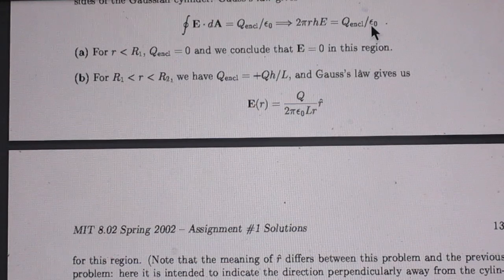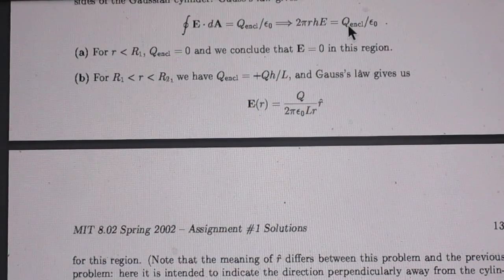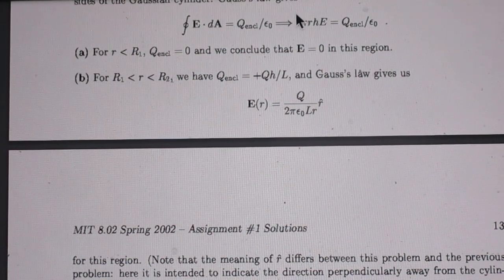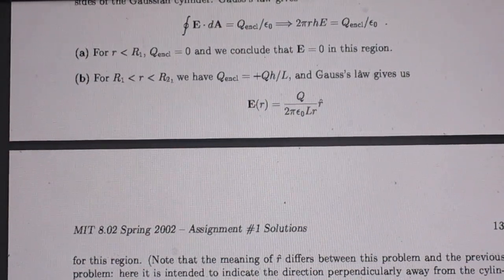Times E is the enclosed Q divided by epsilon zero. So you must calculate the enclosed charge in that closed surface area 2πrh.